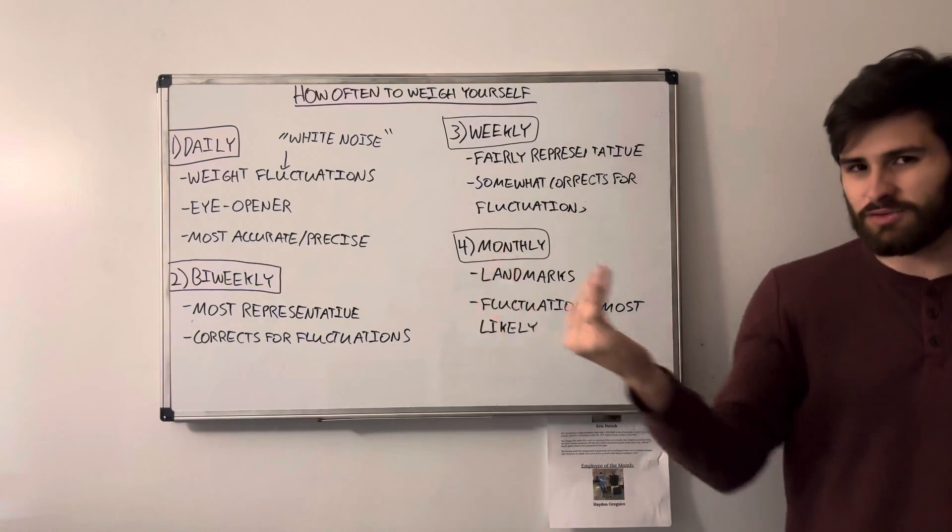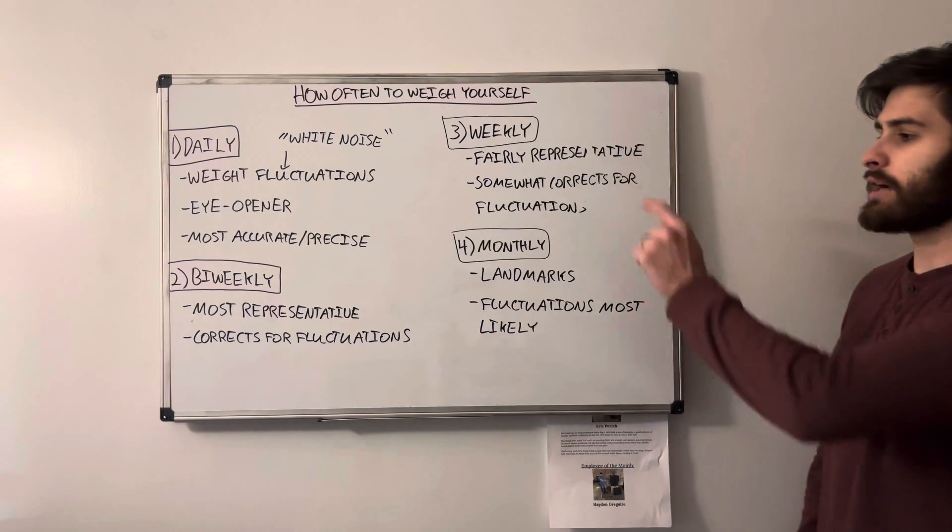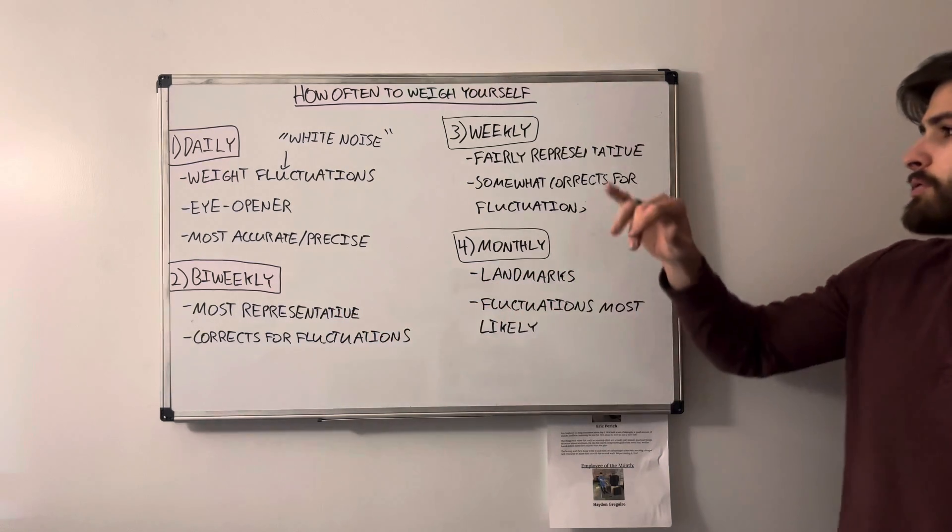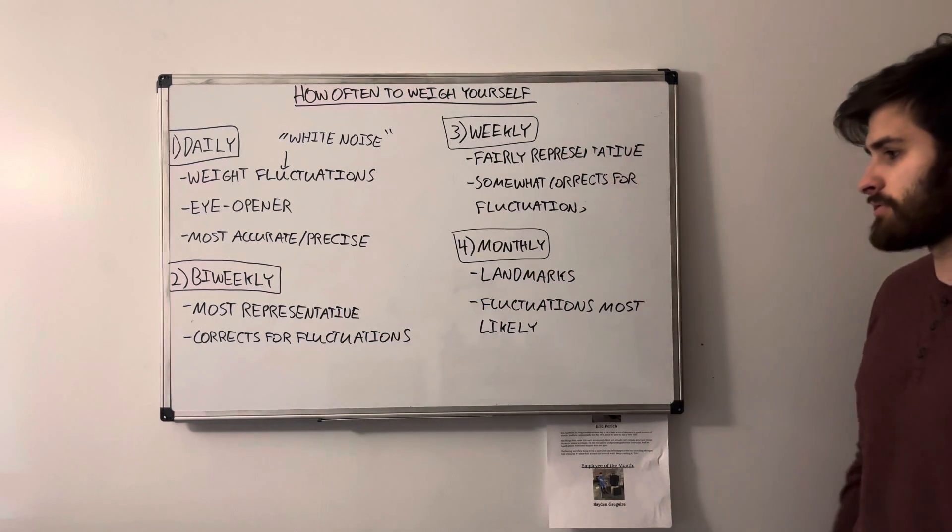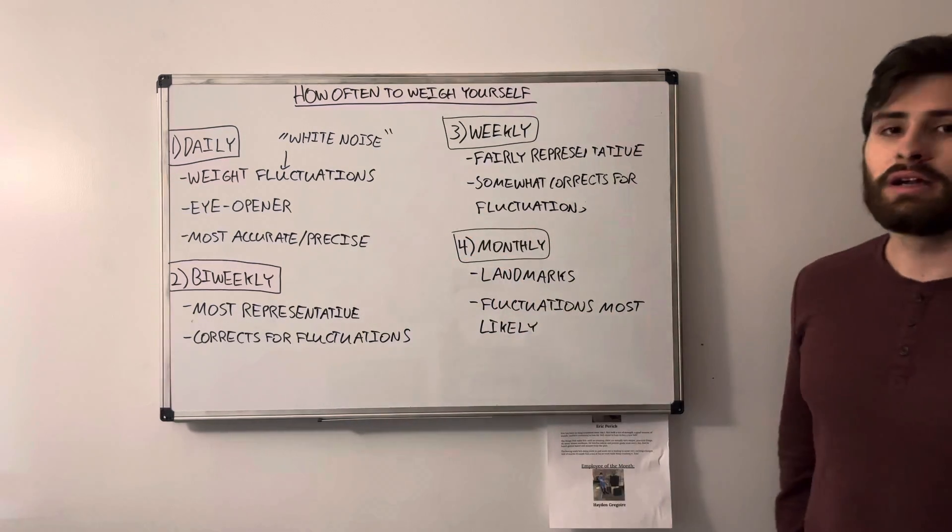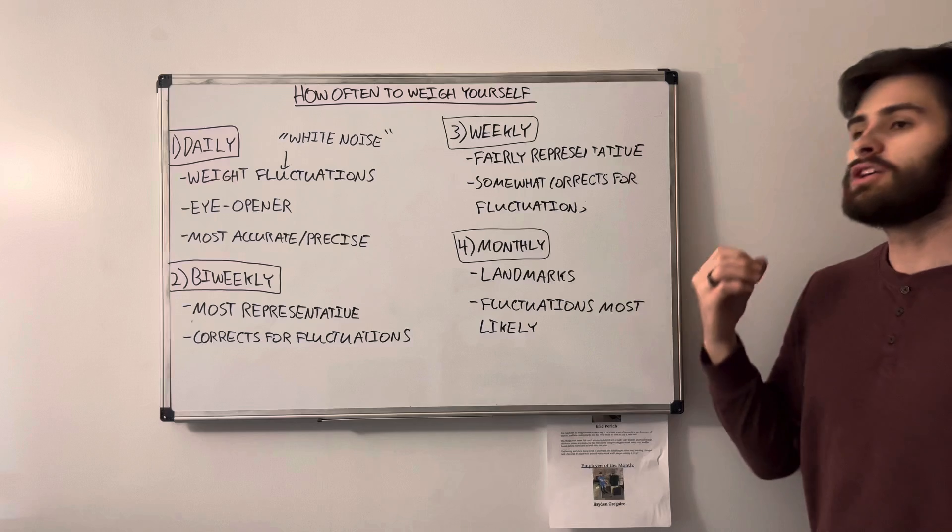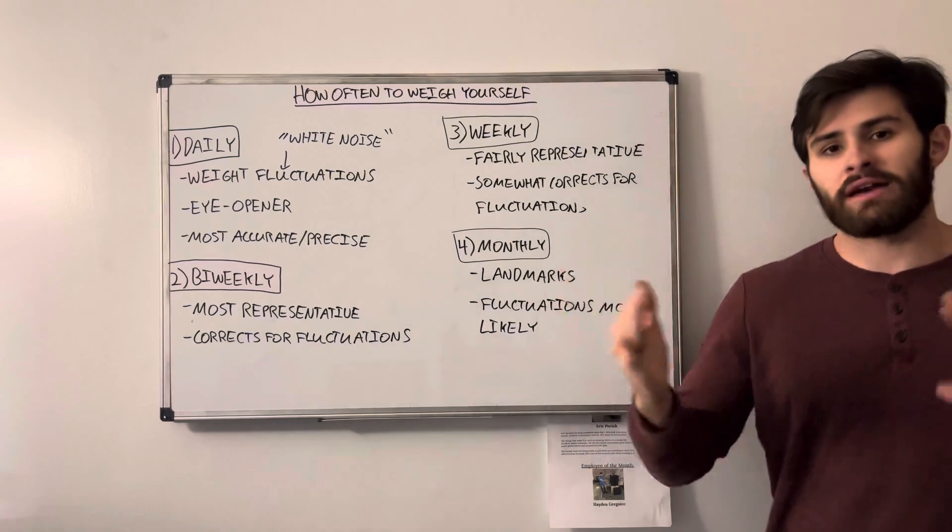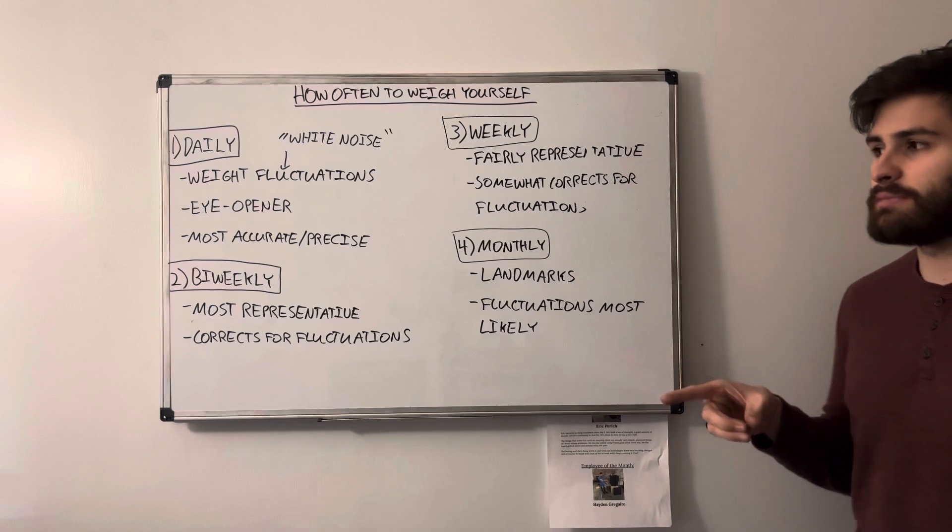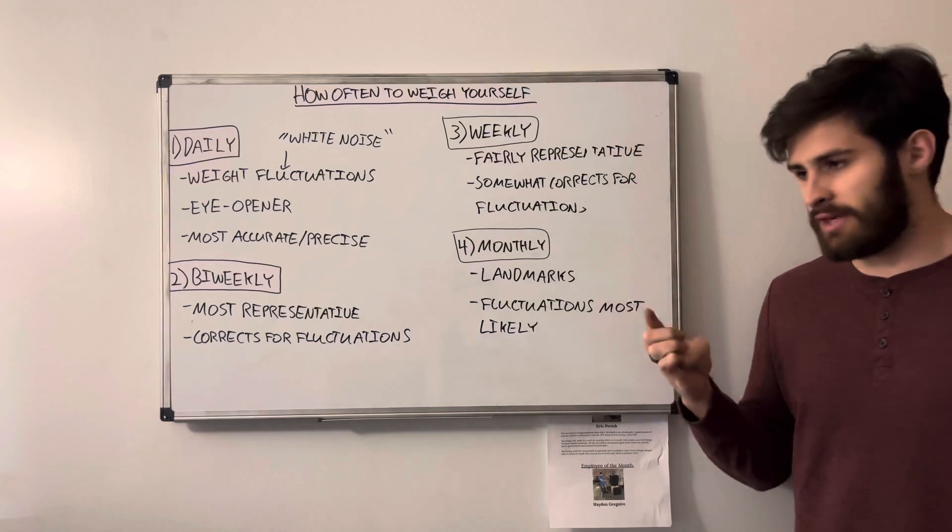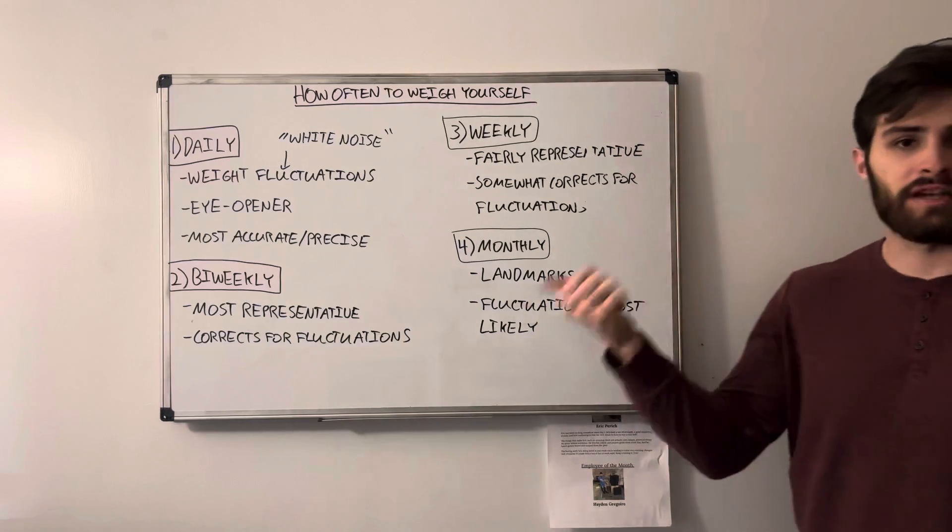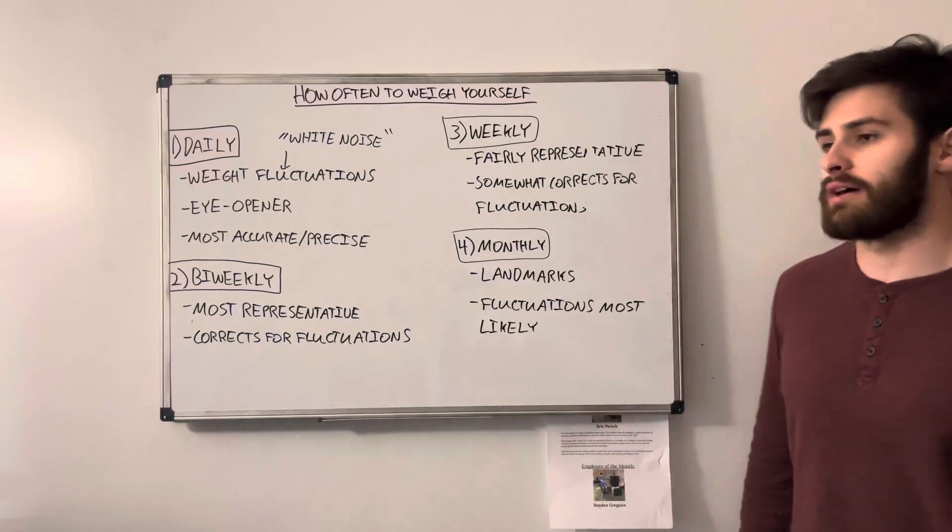Weekly is a little less reliable, still pretty good. It corrects for a lot of those fluctuations, but bi-weekly tends to be better for most people. But this is definitely a viable option for you. Monthly is definitely the least frequent out of our list here. It gives you general landmarks, posts for where you are within your overall diet and training regime, and the fluctuations are most likely to be kept within those measurements, which isn't necessarily a problem if you do other things like take pictures, measure yourself, and things like that.